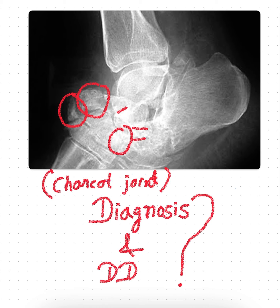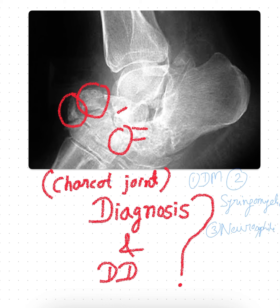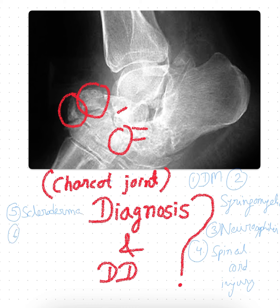The first cause is diabetes mellitus. The second is syringomyelia. The third is syphilis or neurosyphilis. The fourth is spinal cord injury. The fifth is scleroderma. The sixth is excessive alcohol use. The seventh is leprosy.